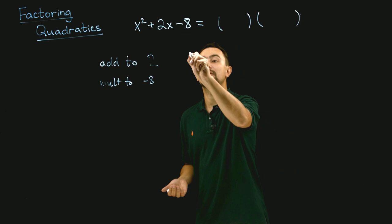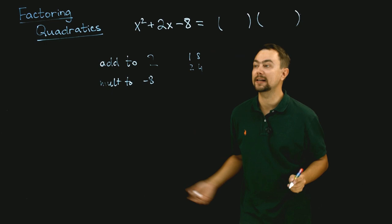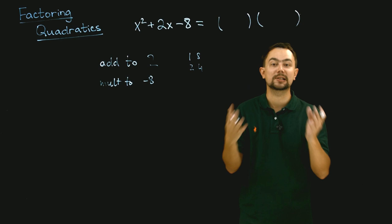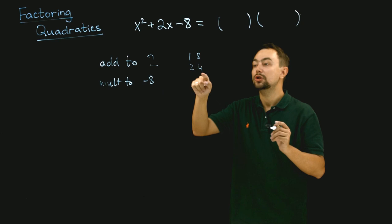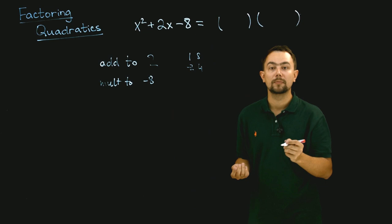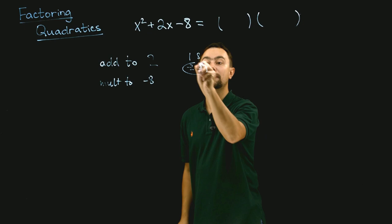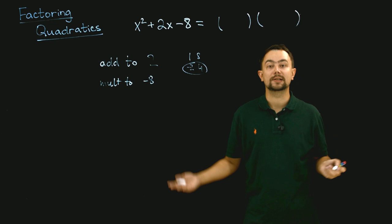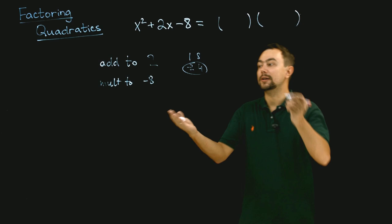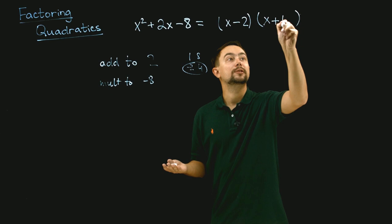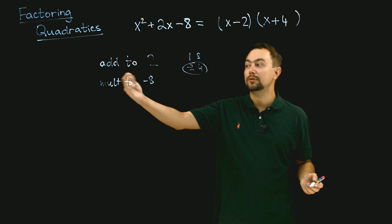That's 1 and 8, 2 and 4. With 1 and 8, no combination of plus and minus gives us a sum of 2. But if we take minus 2 and 4, they add to 2 and multiply to negative 8, because minus 2 times 4 is negative 8 and 4 minus 2 is 2. So the answer is x minus 2 and x plus 4.